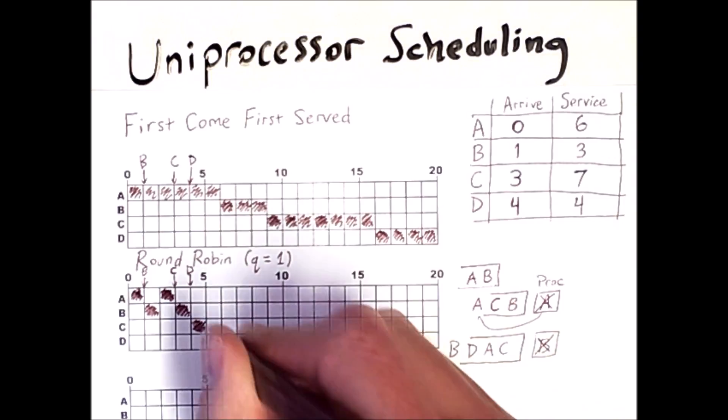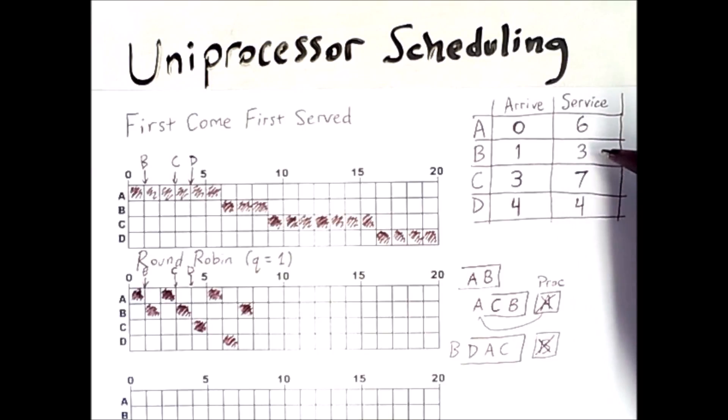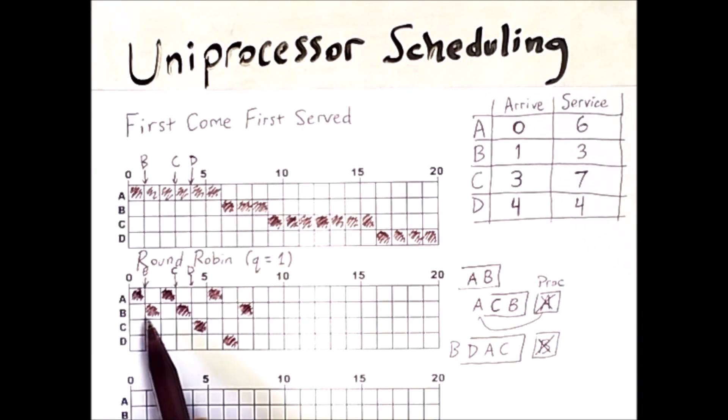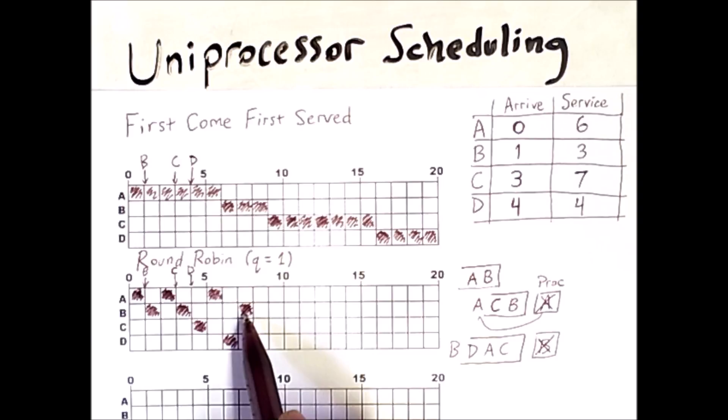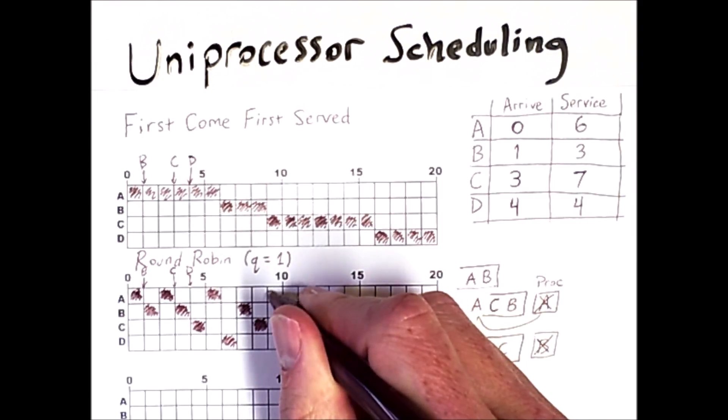A is next, then B, then B. And notice at this point that B's service time was three. So B has run for one, two, three units of time and therefore is no longer on the queue. So the next thing after B would be C again and then A and then D.